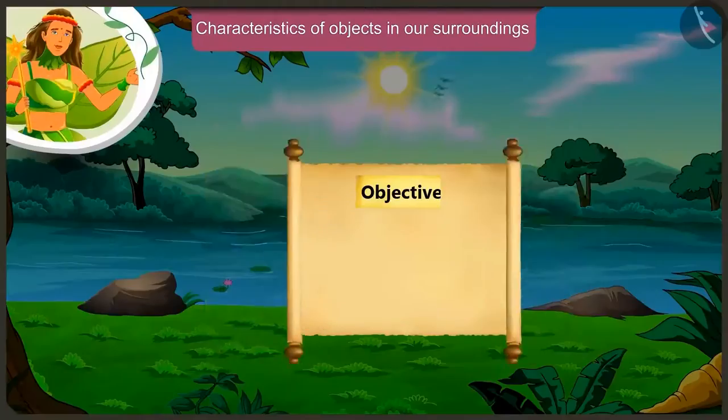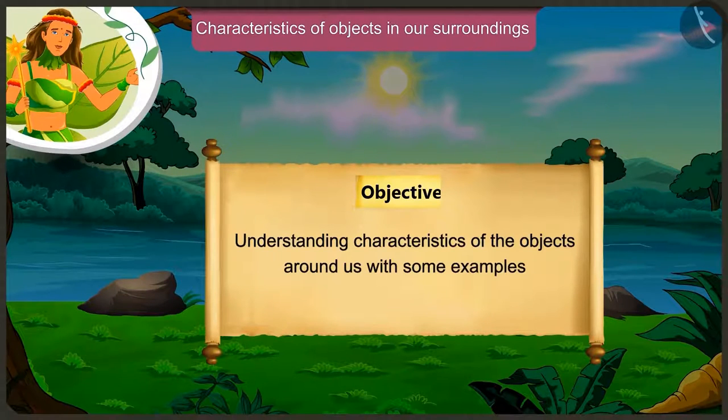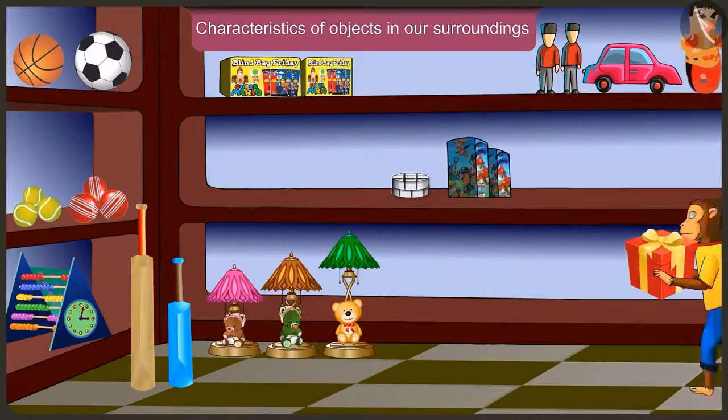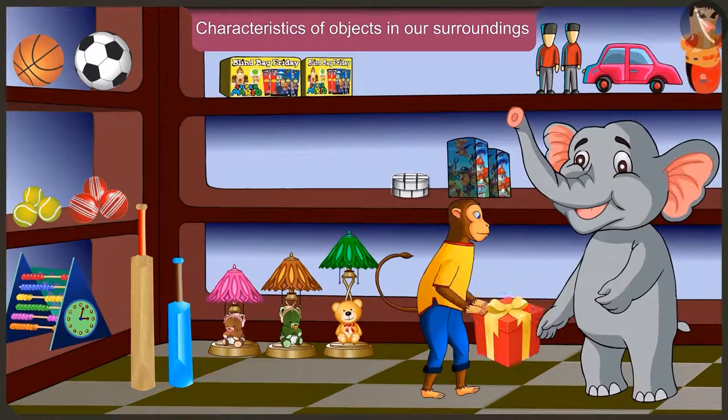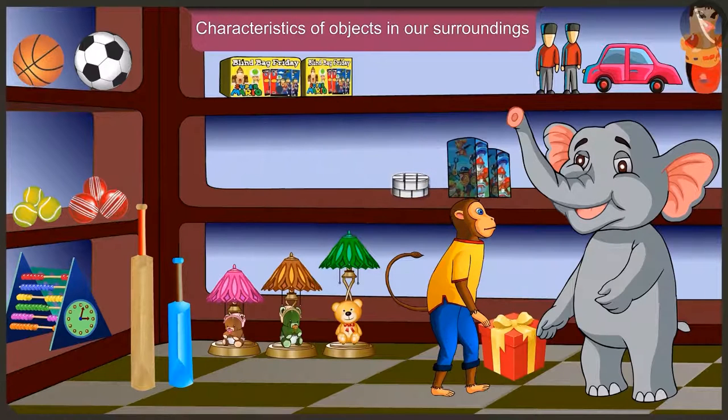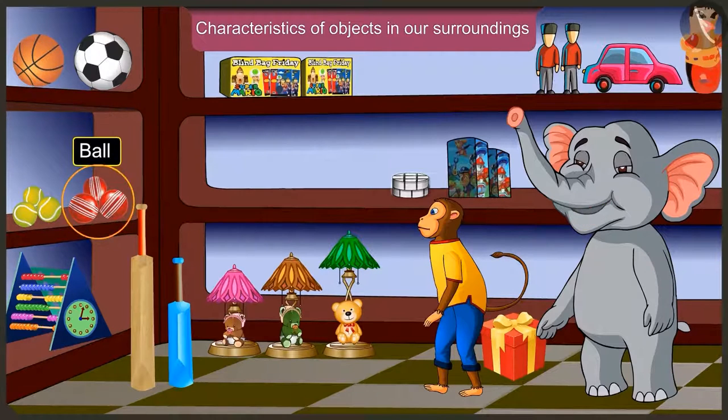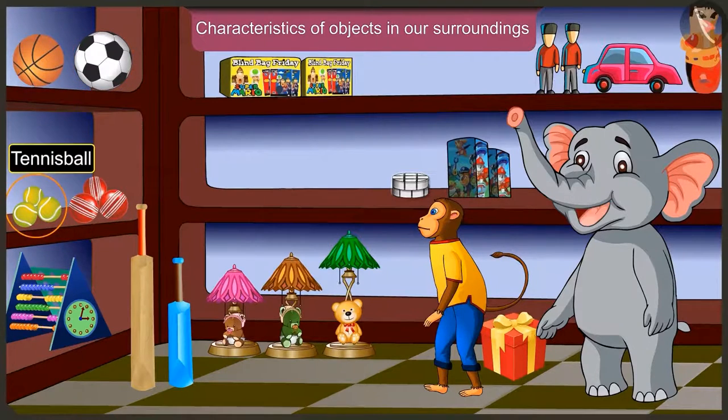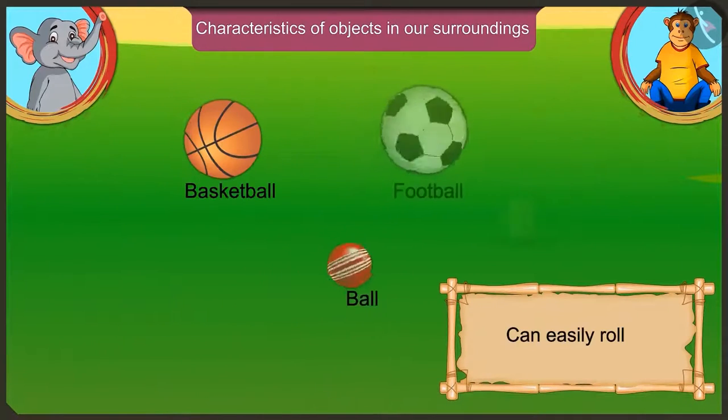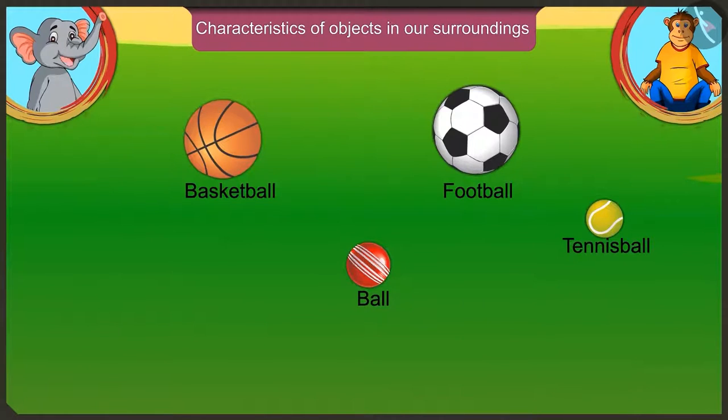Today we will understand the characteristics of objects around us with some examples. Which are the things here which can be easily rolled? We can easily roll basketball, ball, football and tennis ball because they don't have any corners and they have a curved surface.